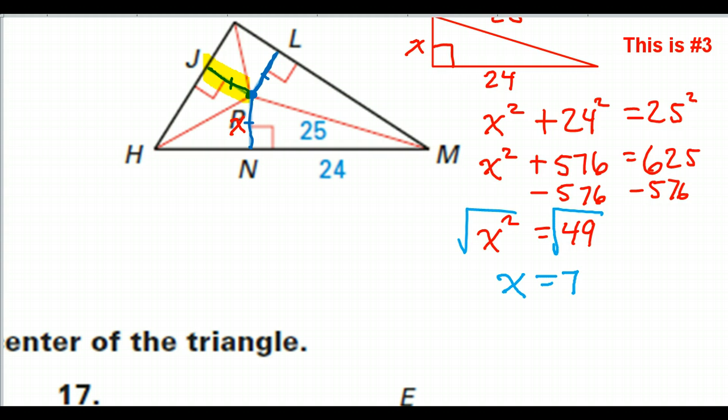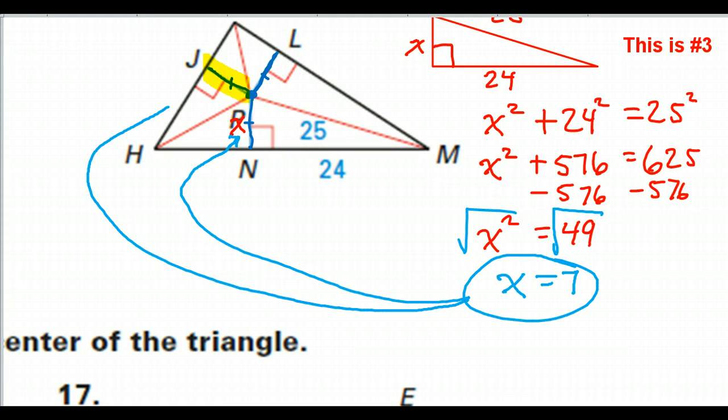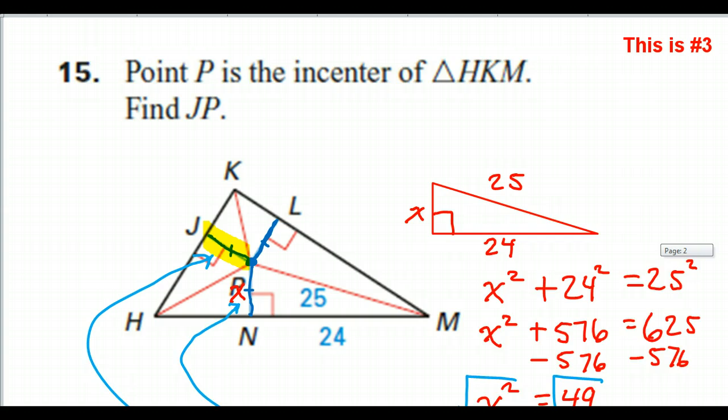So that means PN is 7. But again, because it's the incenter, all three of these lengths should be the same. So if this one is 7, that means this one is 7 also. So the answer is 7.